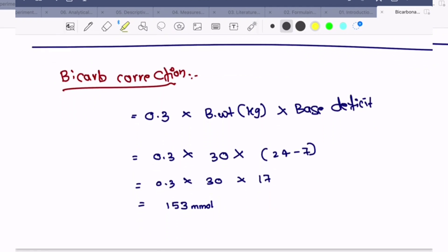For this patient, bicarb correction was 0.3 times body weight times base deficit. 0.3 times 30 times (24 minus 7) gives 153 milliequivalents. 1 ml equals 1 milliequivalent, which equals 1 millimole.